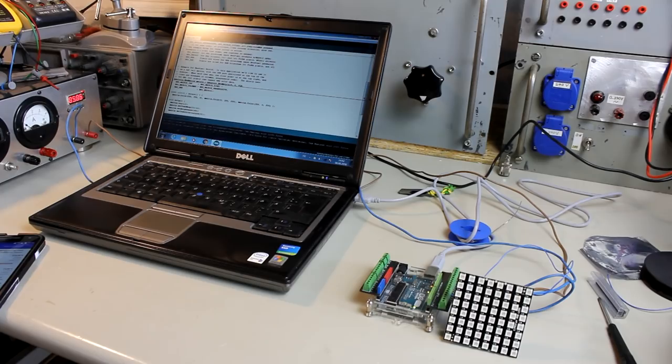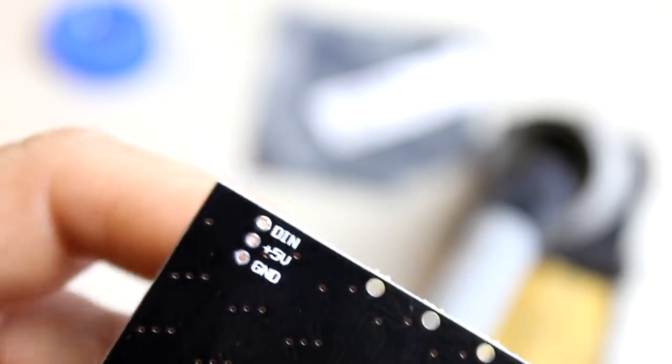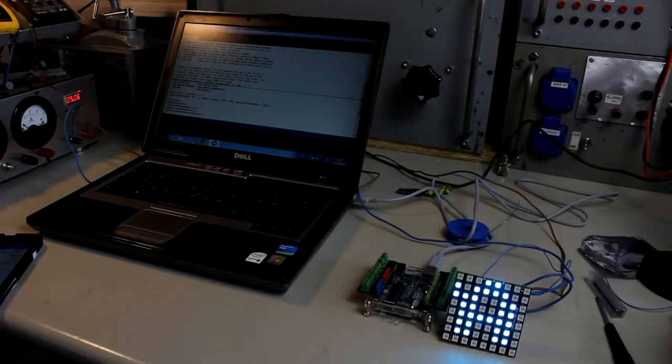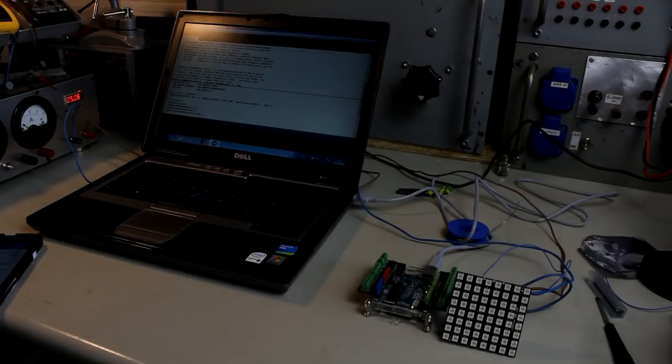And you can also find an Instructables link under the video because it's actually extremely simple to set this up. On the back side of the matrix you have just a handful of pins: two ground pins, they are identical, D-in, D-out. If you only use one module you only need D-in for data. The other one I think is only when you daisy chain several modules.